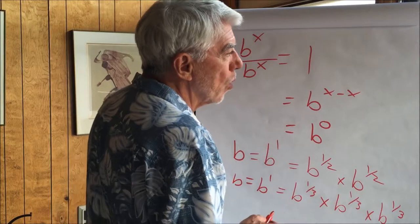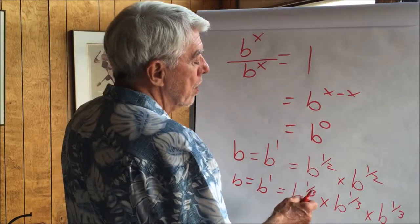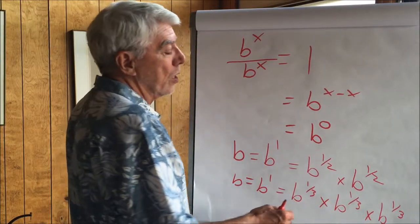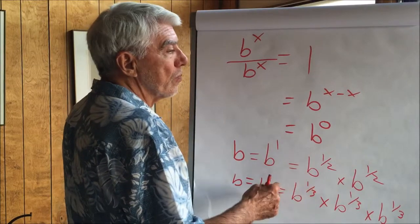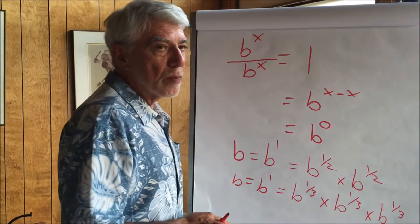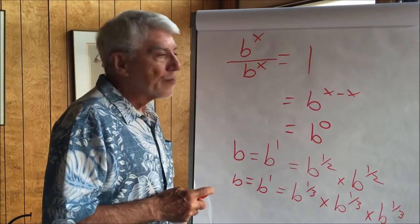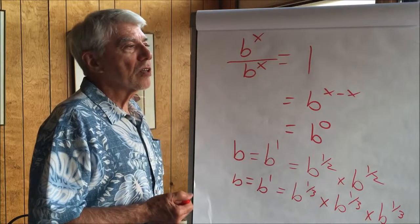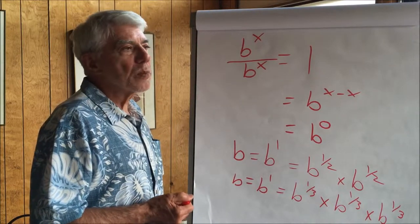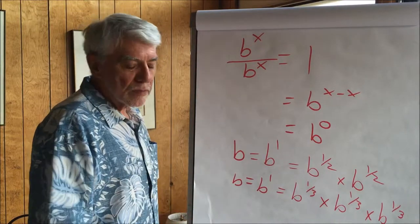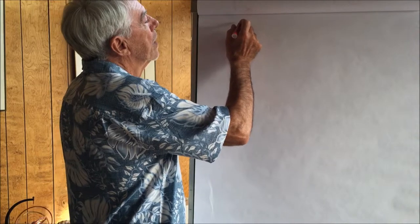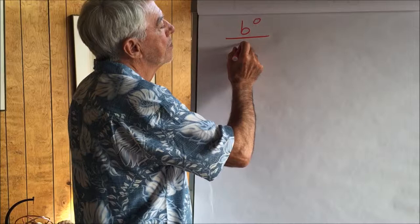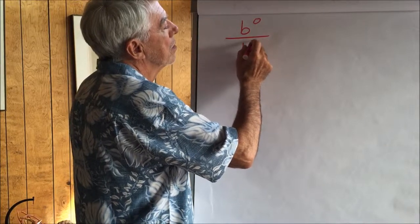Fractional exponents basically say it's the root when the numerator is one. If the numerator isn't one — for example, if we take one third times one third — we get b to the two thirds, which means we're taking the cube root of b and squaring it. So with our definition, all those difficult things that terrorize people — the exponent of zero, the exponent of one, fractional exponents, negative exponents — become non-problems.